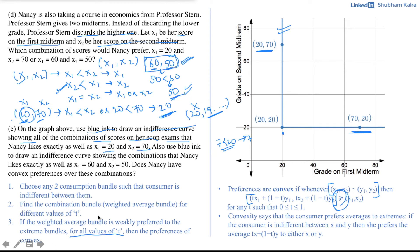Step 3: Check whether the weighted average bundle is weakly preferred to the extreme bundles for all values of t. Instead of checking each bundle individually, we check the entire line at once. If every point on the line gives the consumer at least the same level of satisfaction — meaning the weighted average bundles are weakly preferred to the extremes — then preferences are convex.